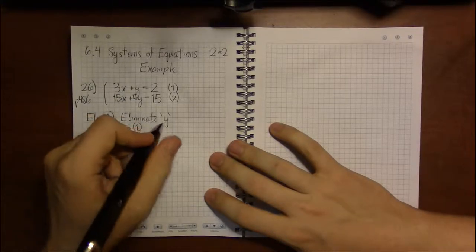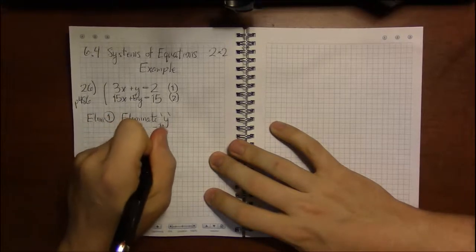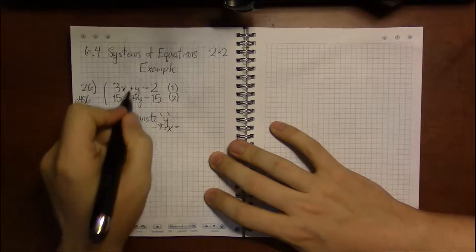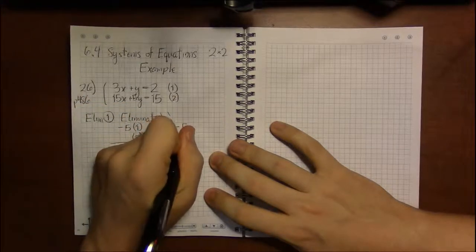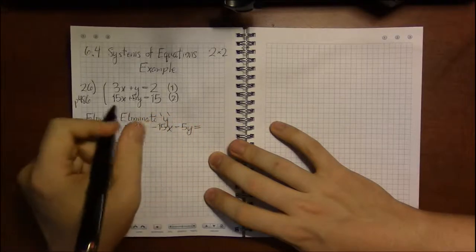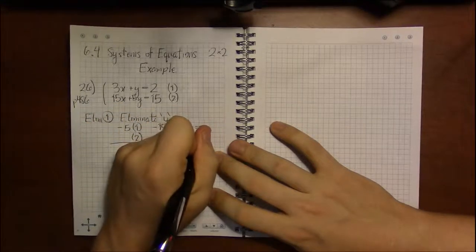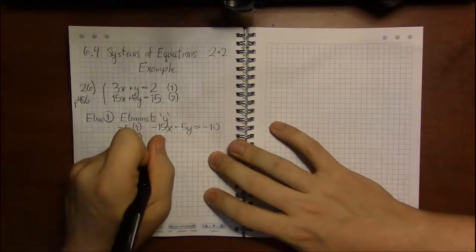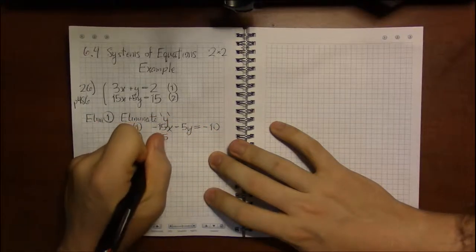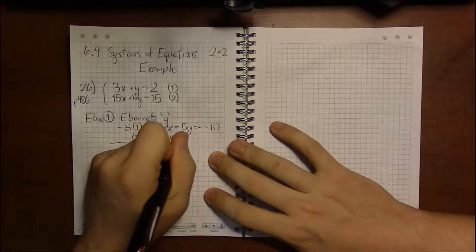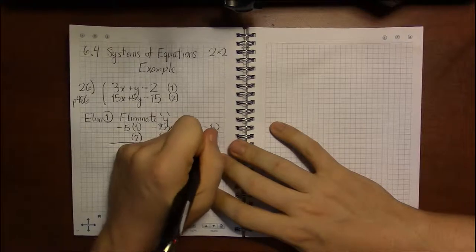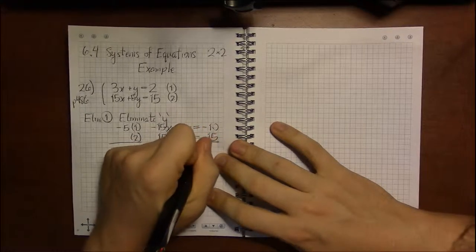So equation 1 times minus 5 is minus 15x then minus 5 times y is minus 5y and minus 5 times 2 is minus 10. Then equation 2 we're not changing that at all so we're just going to copy it down as it is. No change is necessary.